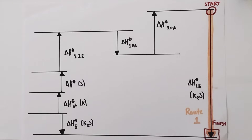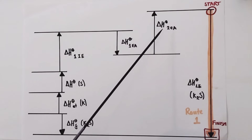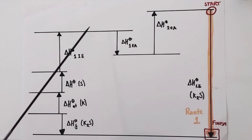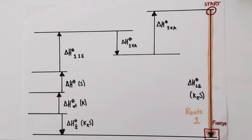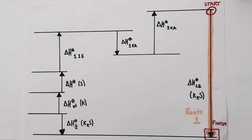Because according to Hess's law, the enthalpy change of a chemical reaction is the same independent of the route taken. So if I can work out the enthalpy change of route two, then it will give me the enthalpy change of route one as well.